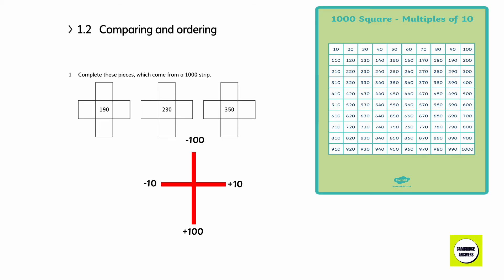Exercise 1.2, Comparing and ordering. Complete these pieces which come from a thousand strip. Let's look at the thousand square and fill the boxes. The first number is 190. When we subtract 100 from 190, we get 90. When we add 100, we get 290. When we subtract 10, we get 180. And when we add 10, we get 200. Let's fill in the numbers: 90, 290, 180, 200.